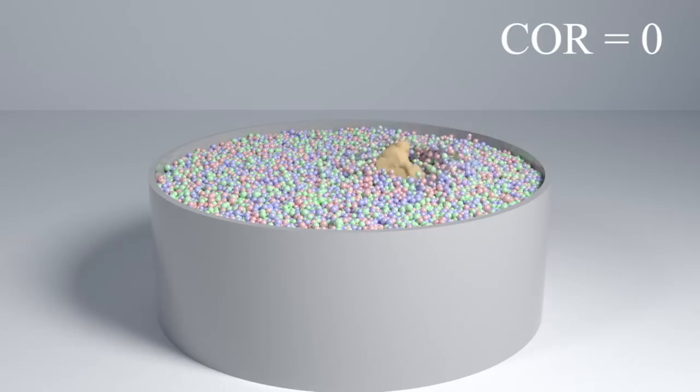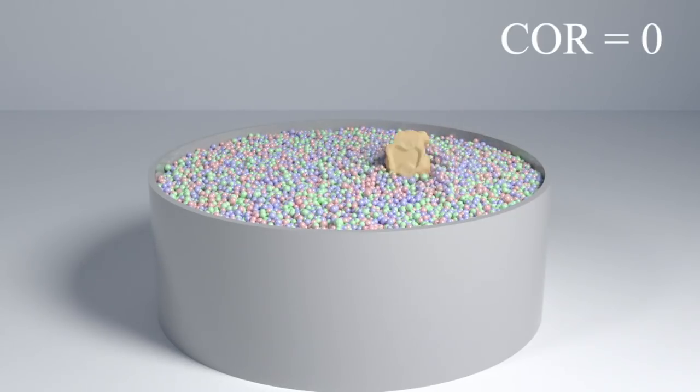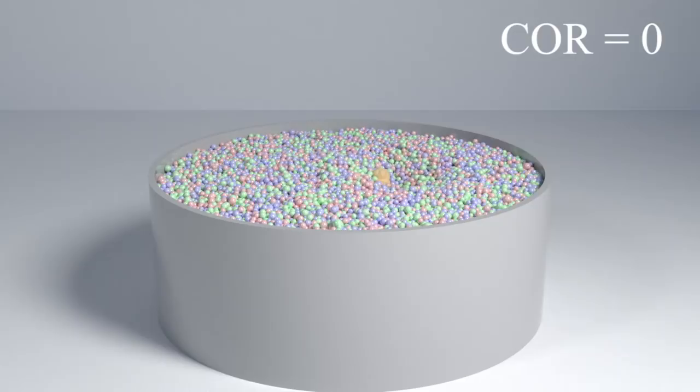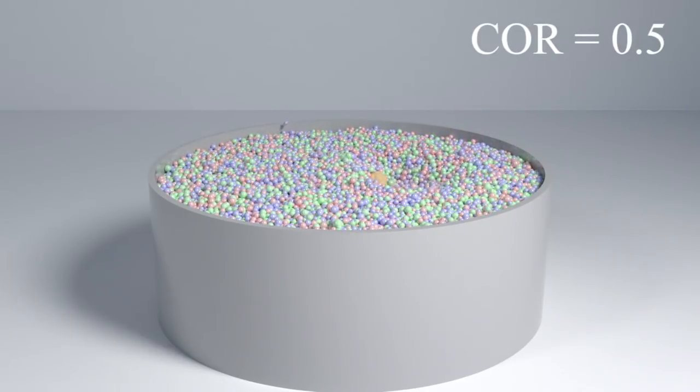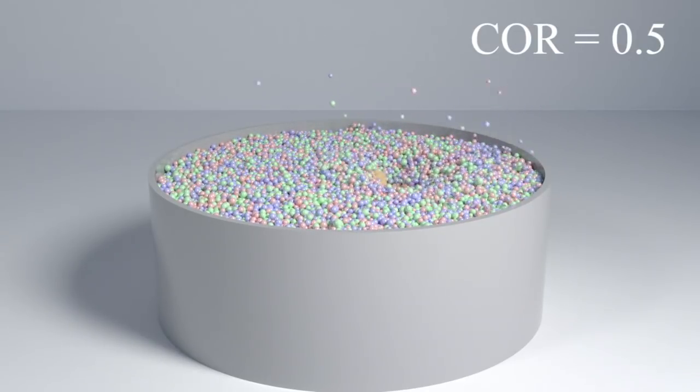First, we show a bunny toss example. With our hybrid approach, we obtain a 1.74x speedup. With a larger coefficient of restitution, we observe a more dynamic splash. Our hybrid approach successfully captures different ballistic motions.